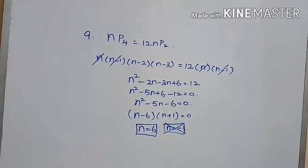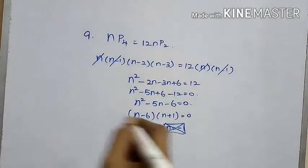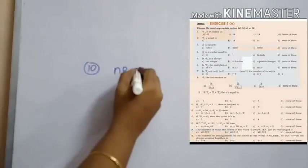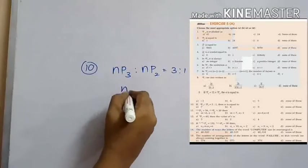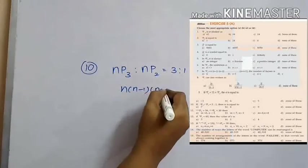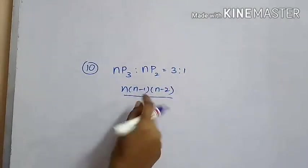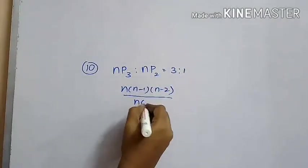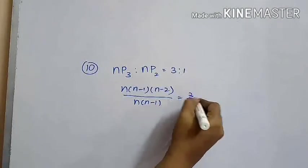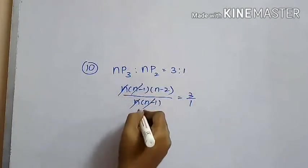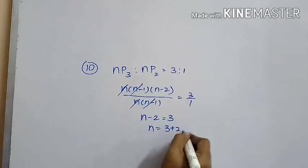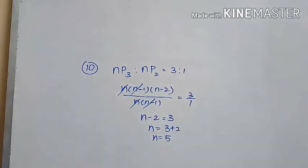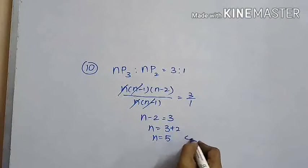For the tenth question, with NP3 / NP2 = 3:1, NP3 can be written as N(N−1)(N−2) and NP2 as N(N−1). Cancelling common terms, we get N − 2 = 3, which implies N = 5. The correct option is C.